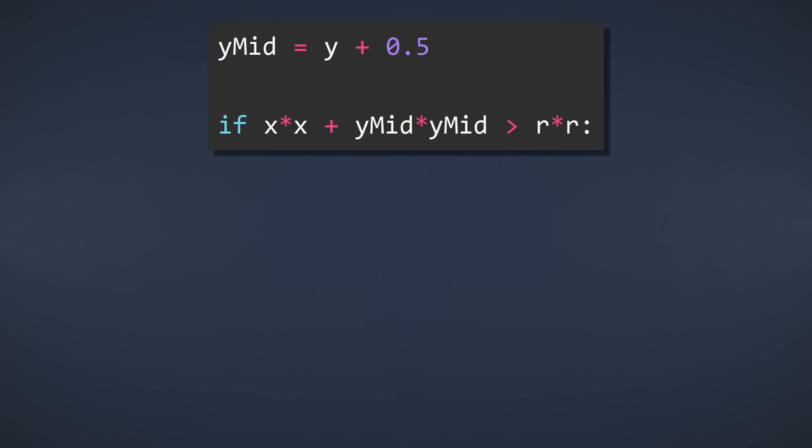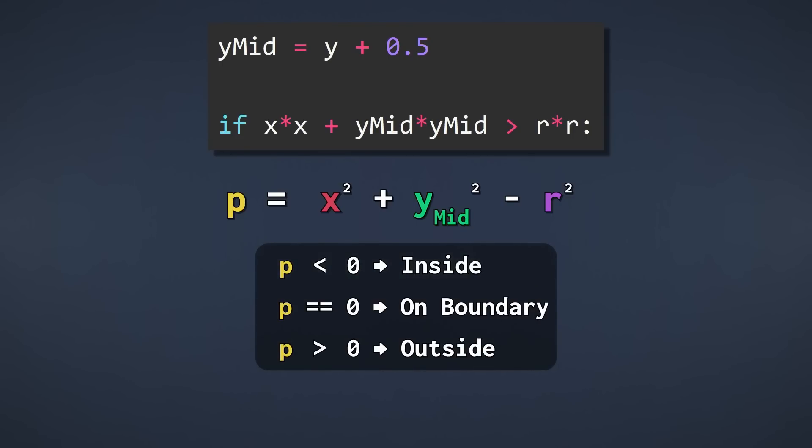We'll start by rewriting our condition as the following expression: x squared plus y mid squared minus r squared. This is called the decision parameter, and I'll name it p. Everything is the same as before, except we can now check if p is less than or larger than zero. Less than zero means it's inside of the circle, and larger means it's outside of the circle, while an exact zero means we are exactly on the boundary of the circle.